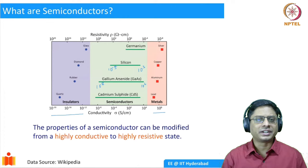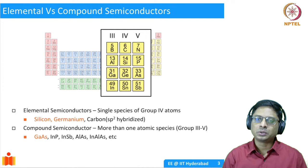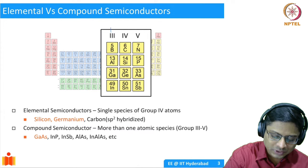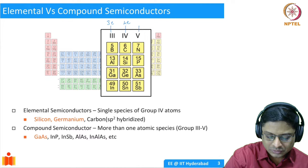We understand that semiconductors have intermediate conductivity, but how does this come about? What is the origin of this property? To understand that, we'll have to look at the periodic table. Out of more than 100 elements in the periodic table, most of the important semiconductors fall into three groups: group 3, group 4, and group 5. Group 3 elements have three electrons in the valence shell, group 4 have four electrons in the outermost shell, and group 5 have five electrons.